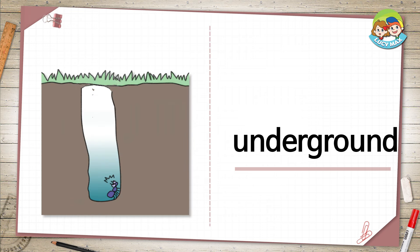Underground. The grass is on the ground. The ant is below the ground. So the ant is underground. What vehicle runs underground? Yes, a subway runs underground.